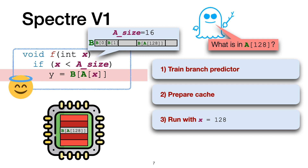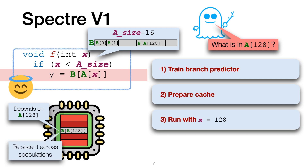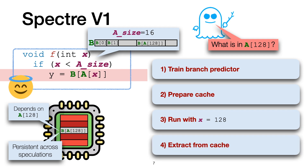Specifically, the block containing b of a of 128 is loaded into the cache. Observe that the position of the gray block directly depends on the value of a of 128. Later, when the speculative execution terminates, the cache content persists, so the gray block stays there. Finally, in the last step of the attack, we can extract the content of a of 128 by probing the cache and learning which of the blocks is being evicted.